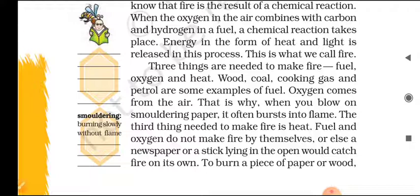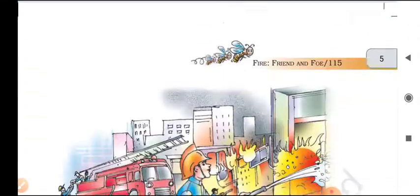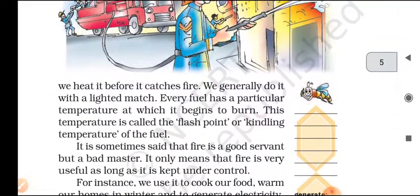Fuel and oxygen do not make fire by themselves — otherwise a newspaper or a stick lying in the open would catch fire on its own. To burn a piece of paper or wood, we heat it before it catches fire; we generally do it with a lighted match. Every fuel has a particular temperature at which it begins to burn. This temperature is called the flash point or kindling temperature of the fuel.